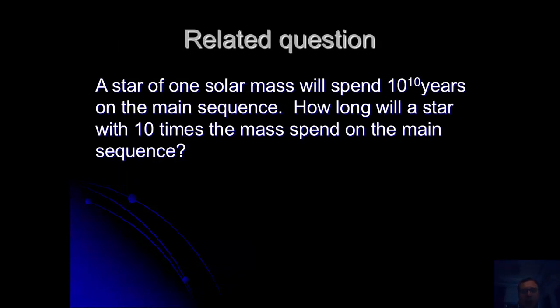If a star of one solar mass will spend 10^10 years in the main sequence, we can think about how long will a star with 10 times the mass spend on the main sequence using that idea of proportionality. So, 10^10 years times 1 divided by 10 to the power of 2.5 gives me the typical lifespan of a star which is 10 times more massive.